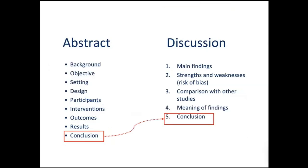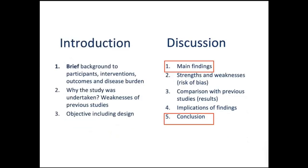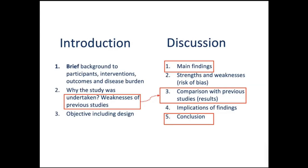The conclusion in the discussion comes from the conclusion of the abstract — the text is almost identical. You can add a few more lines after repeating the same line from the abstract's conclusion. Studies referred to in the introduction can be used again in discussion, but this time you compare your results with the results of those studies, rather than just commenting on their methods.